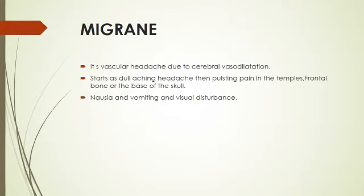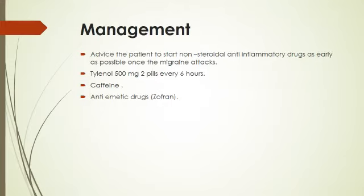Migraine is a vascular headache due to cerebral vasodilation, starting as a throbbing aching headache, then throbbing pain in the temples, frontal, or base of the skull. Nausea, vomiting, and visual disturbance are common. Management: advise the patient to start non-steroidal anti-inflammatory drugs as early as possible once the migraine attack starts. Paracetamol 500 mg, 2 pills every 6 hours, and caffeine with anti-inflammatory drugs may be used.